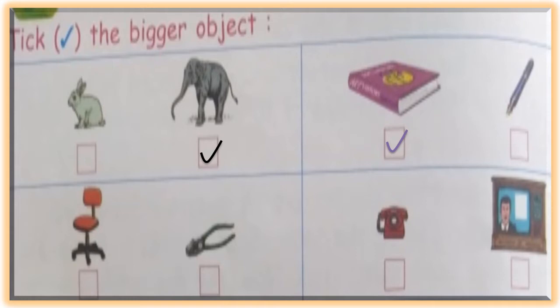Next, chair and cutting plier. Here we know that the chair is bigger object. Next, telephone and television. Which is the bigger object? Television is the bigger object.